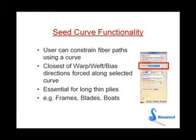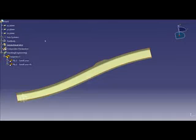AFM also provides additional functionality of the seed curve. This way the user can constrain the fibres, whether from the warp, the weft, or even the bias directions, along a curve. This is extremely useful in aerospace frames, wind turbine blades, and boat hulls, as some of the next examples will show.